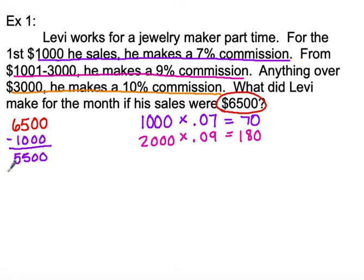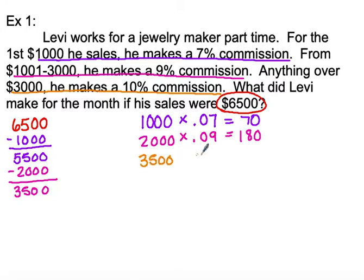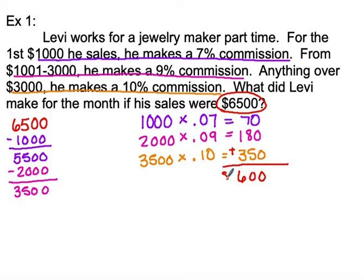Now I'm going to take off the next $2,000, and that's going to leave us with $3,500 for his final level. Anything that he makes over $3,000 — he has $3,500 left — he's going to make 10%. With that $3,500, we're going to calculate at the higher rate of 10%, which is going to give him $350. When we add all three graduated commissions together, he earns a total of $600 in commissions for the month.